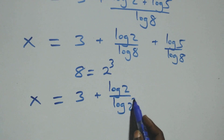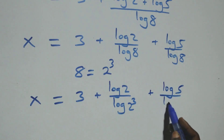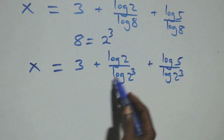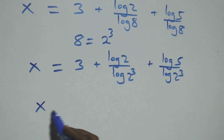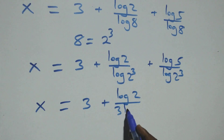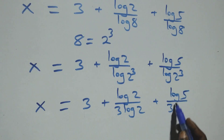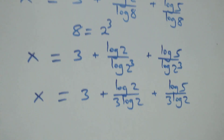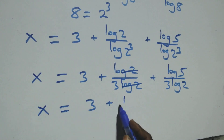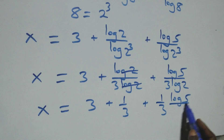So we have log 2 cubed in the denominator, which is log 8. Applying the product rule again: x equals 3 plus log 2 over log 2 cubed plus log 5 over log 2 cubed. Using the power rule on the denominator: 3 log 2. Log 2 cancels in the first fraction, giving 1 over 3. So x equals 3 plus 1 over 3 plus log 5 over 3 log 2.